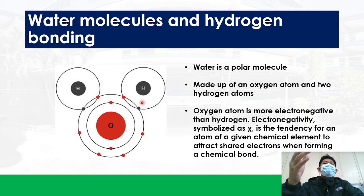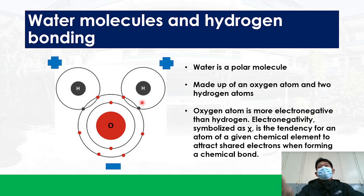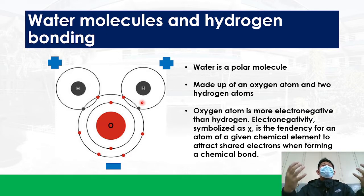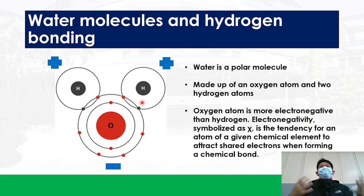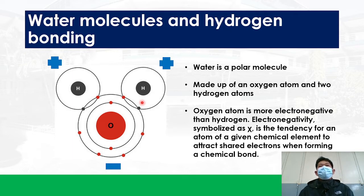Since hydrogen has only one electron and oxygen attracts the shared electrons coming from the hydrogen atoms, it leaves the hydrogen atoms partially positive. Because the electrons stay closer and longer to the oxygen nucleus, oxygen yields a partially negative charge. That is why we say water is a polar molecule — it has opposite charges across its structure: a partially positive region and a partially negative region.